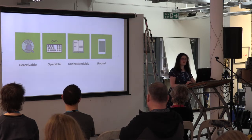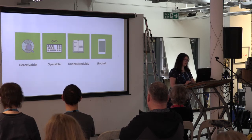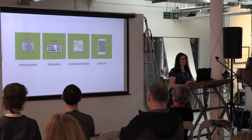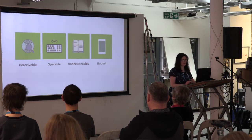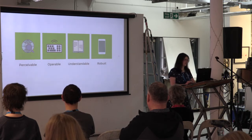Operable means that whatever means you use to access a website — whether that's a mouse, a keyboard, a switch control, or swiping on your smartphone — you should be able to operate the controls. Understandable means it's predictable, it's consistent, and it's appropriate for the audience. And finally, robust means it's standards-compliant and it works across various devices: desktop, laptop, tablet, and phone. But we're mainly going to focus here on the first two categories, perceivable and operable.